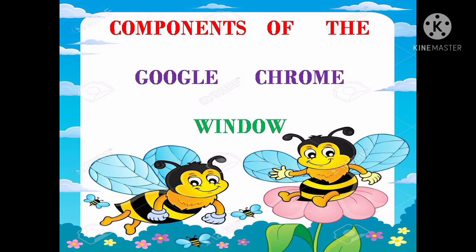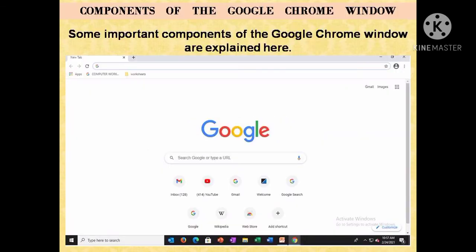Now children, in a web browser there are some components. Components of the Google Chrome window. Some important components of the Google Chrome window are explained here. If you can see the picture, it is the default page of Google Chrome which is set to Google. There are some important components present in this picture, and I will be explaining each sign one by one so that the components are clear.